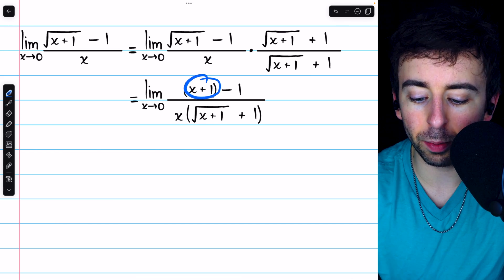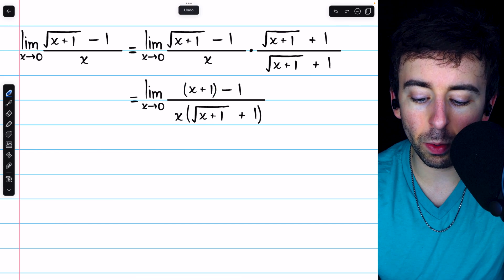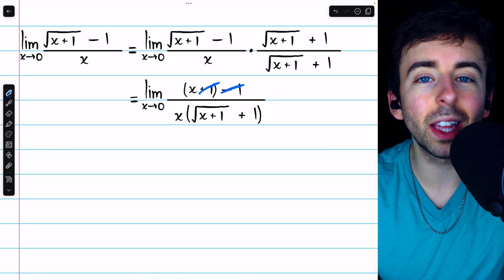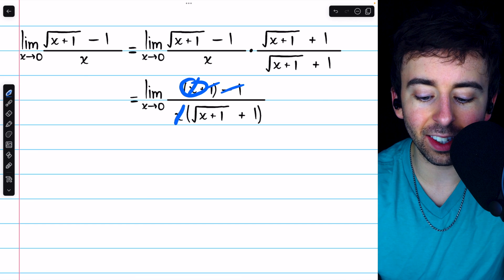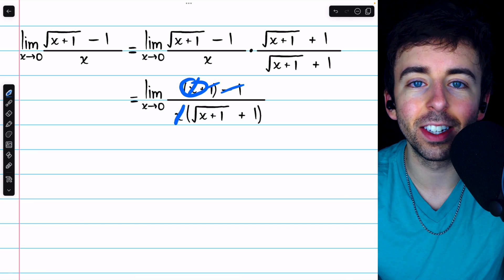Notice, in the numerator, we have x plus 1 minus 1. So, the plus 1 and the minus 1 will cancel out, and just leave x in the numerator, which can cancel out with the factor of x in the denominator.